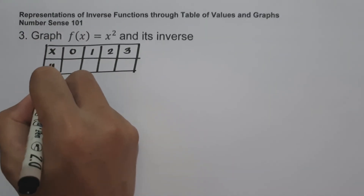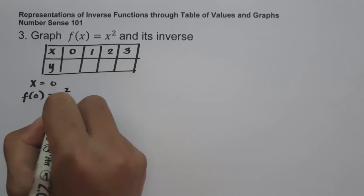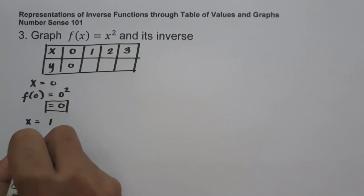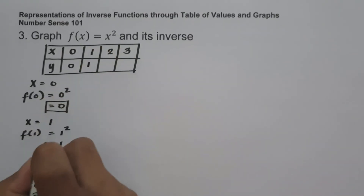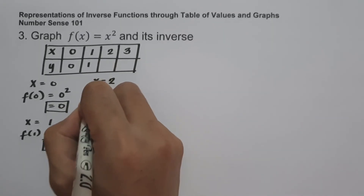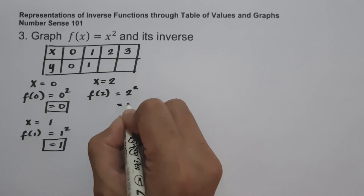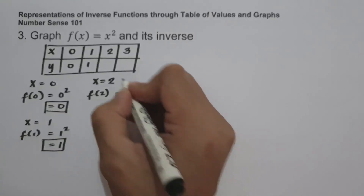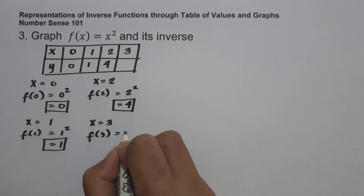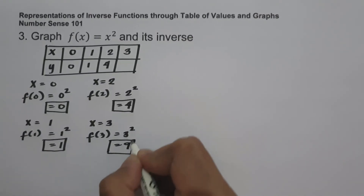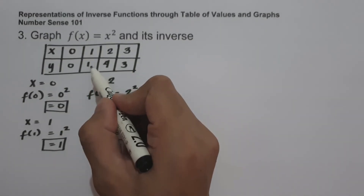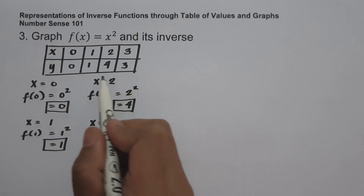For x equals 0: f of 0 equals 0 squared, which is 0. For x equals 1: f of 1 equals 1 squared, and that is 1. For x equals 2: f of 2 equals 2 squared, and that is 4. For x equals 3: f of 3 equals 3 squared, and that is 9. So the set of ordered pairs in the given function is: 0 and 0, 1 and 1, 2 and 4, and 3 and 9.